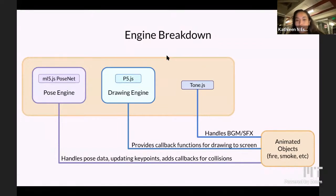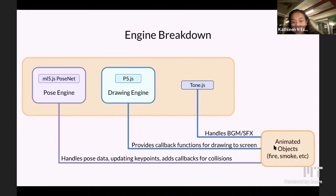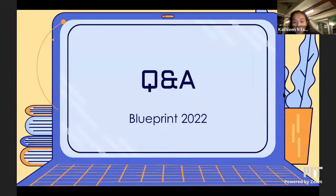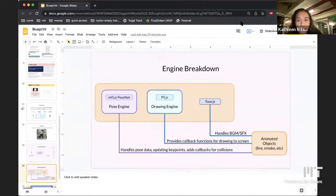We wrote an engine to tie all the pieces together, because PoseNet gives us output and we want to add drawings and sounds into one cohesive thing. For example, to animate fire: PoseNet outputs key points, then we use P5 to draw at those key points on the screen, and we add sound — all packaged together and rendered on screen. Let me show you what that looks like before we hop into the Q&A.